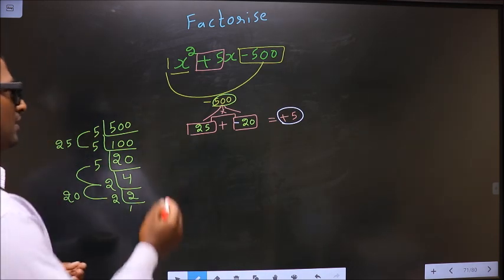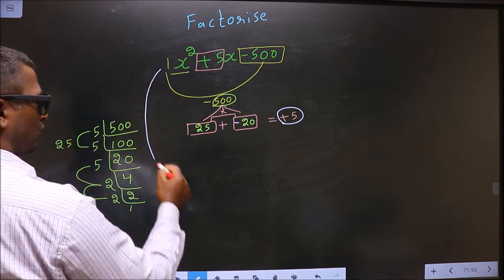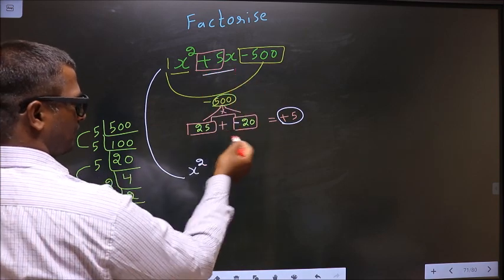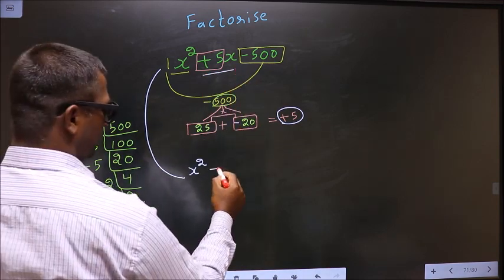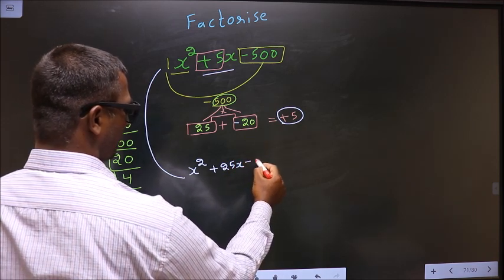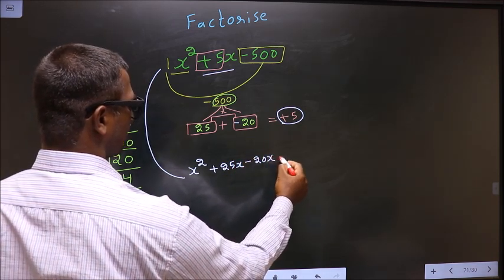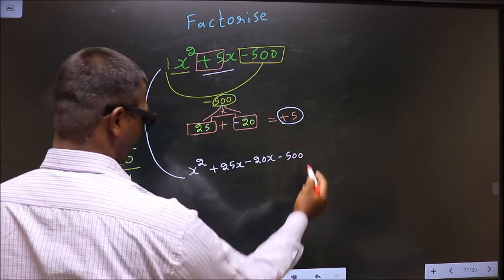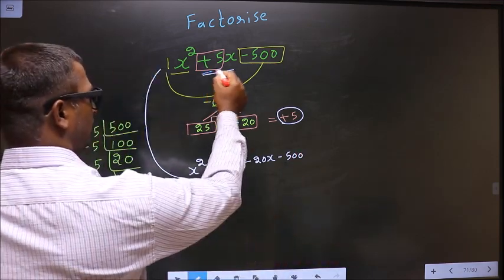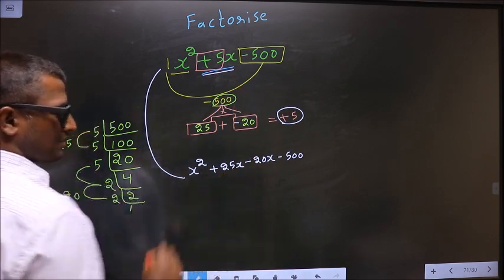Now you change this in place of 5. In place of 5x, now you write this: that is x squared plus 25x minus 20x minus 500. In place of 5x, I have written this.